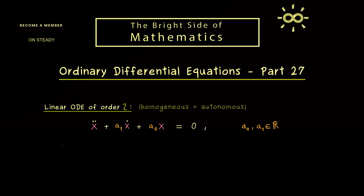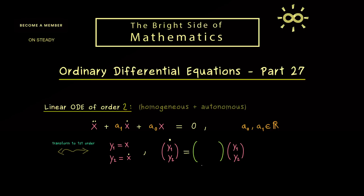We can equivalently reformulate this into a two-dimensional ODE of first order. We set y1 to represent our original function x, and y2 to represent the first derivative x-dot. Then taking the vector (y1, y2) and its derivative gives a matrix-vector multiplication. The matrix A has first row (0, 1) — since the derivative of y1 is simply y2 — and second row (-a0, -a1), coming from bringing the ODE terms to the right-hand side. The result is a two-dimensional linear system with real matrix A.